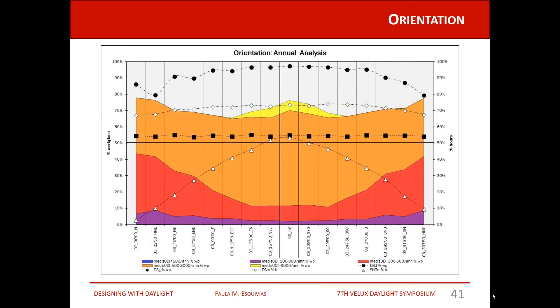Doing the same analysis with orientation, we can see that the diffuse contribution is almost constant, which validates this method as it correlates with the climate-based daylight factor. We can also see that the performance of excessive solar heat gains is in concordance with thermal studies. Notably, the percentage of the work plane with illuminances higher than 3,000 lux corresponds with excessive solar heat gain higher than 40%.